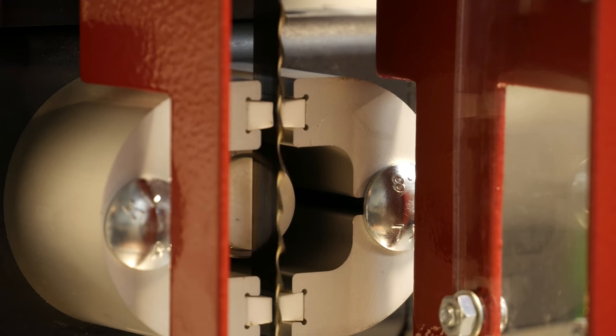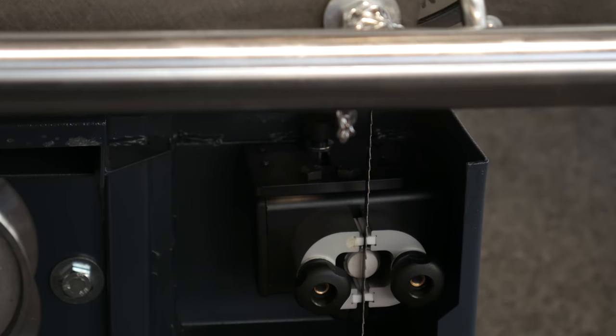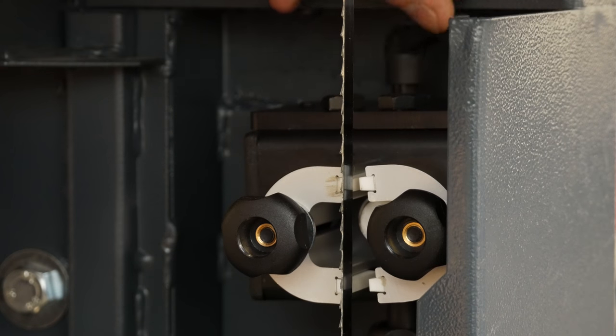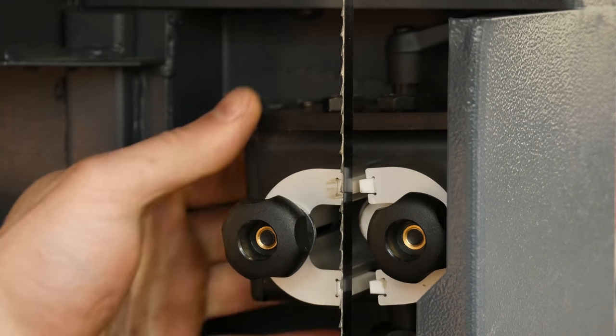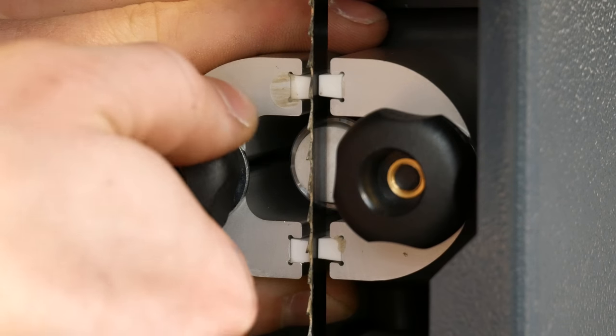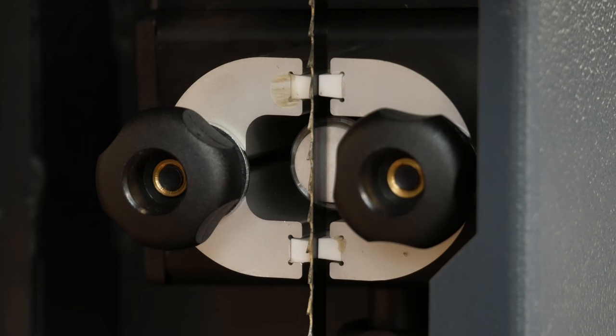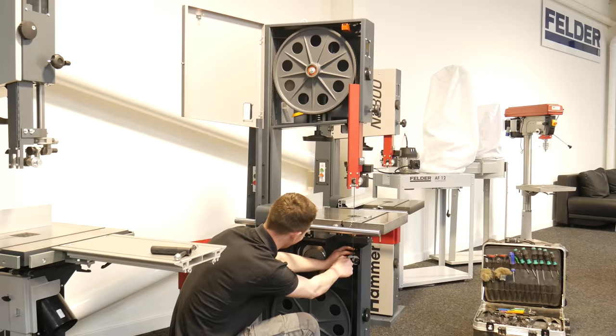Repeat this process on the lower blade guides using the same principles, making sure the blade's movement remains unimpeded. Tighten each of the clamps and then close the blade guard and wheel doors.